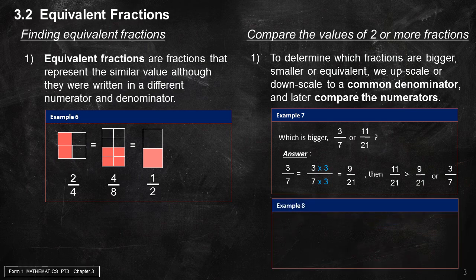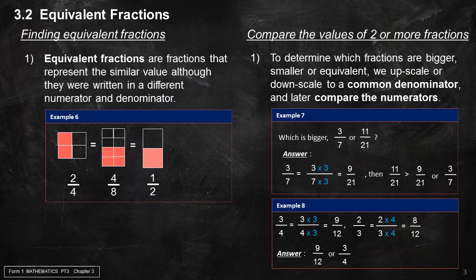Example 8: Which is bigger — 3 over 4 or 2 over 3? 3 over 4 can be upscaled to 9 over 12. 2 over 3 can be upscaled to 8 over 12. After comparing, we find that 3 over 4 is bigger than 2 over 3.